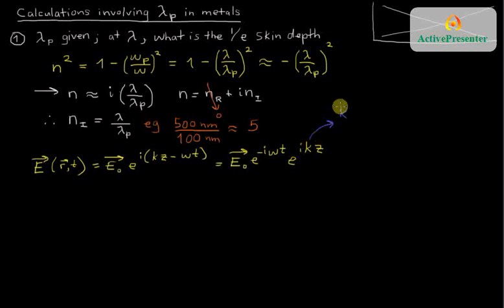Now what exactly is k in this situation? We know that k in the metal, one way to think of it, k is always n times omega over c-naught, which in this case means it would be i times n imaginary times omega over c-naught.